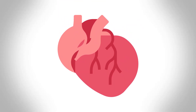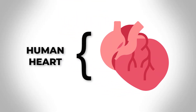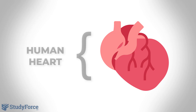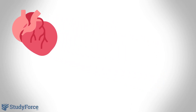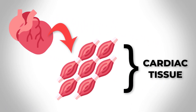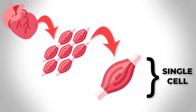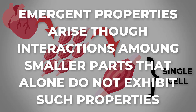In the field of biology, emergent properties is the idea that biological systems form from varying levels of lesser complex components. The system then possesses characteristics that you wouldn't find in any of its components taken individually. Because of this, we see an emergence of new properties at each level of complexity.